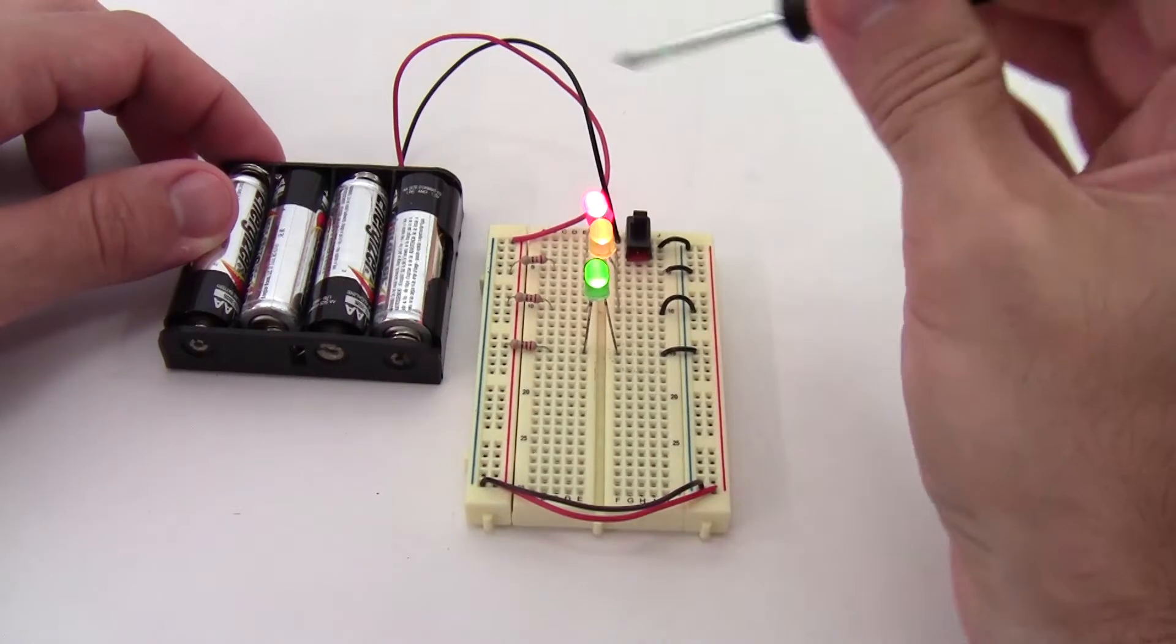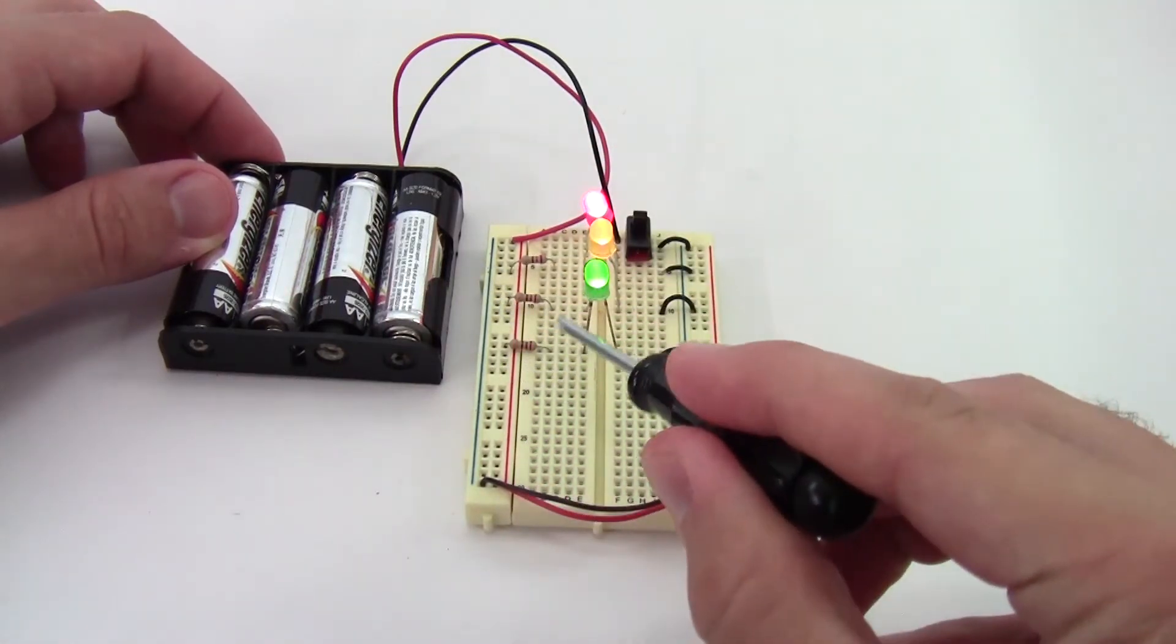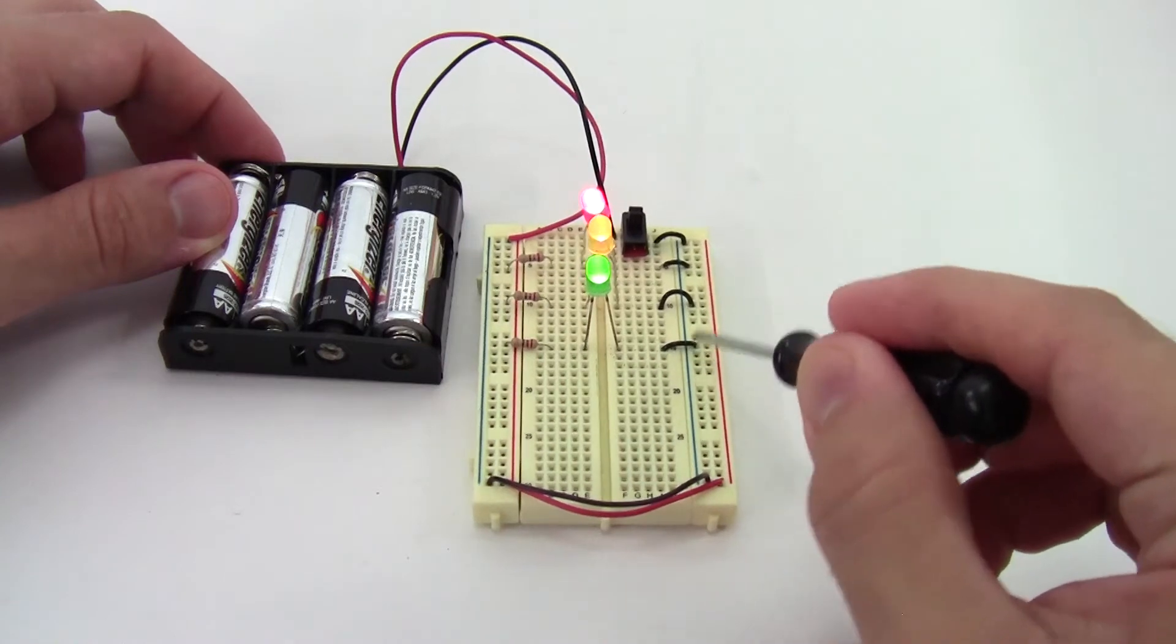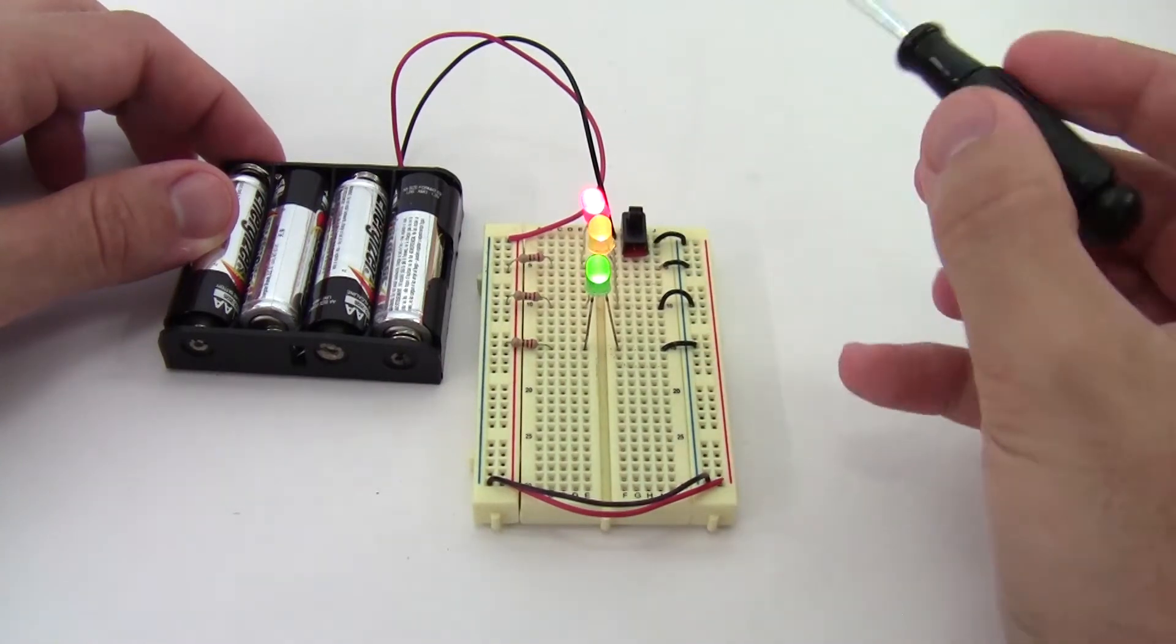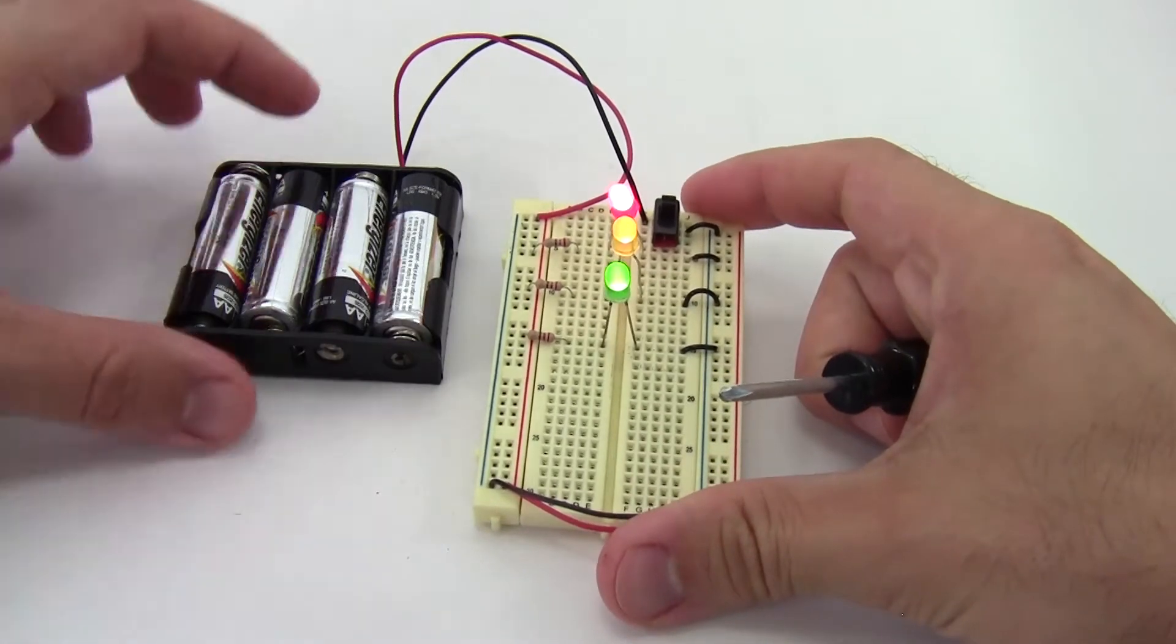When I turn the switch on, electrical current flows from the battery pack through the resistors, through the LEDs, through these jumper wires, through the switch, and then back to the battery pack.